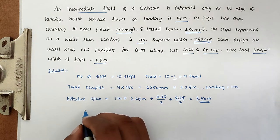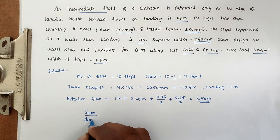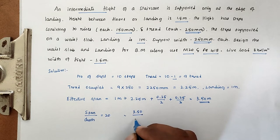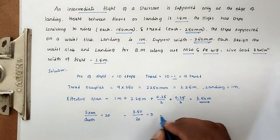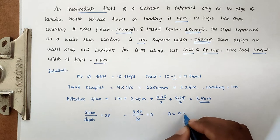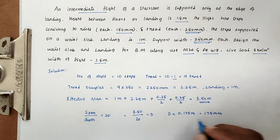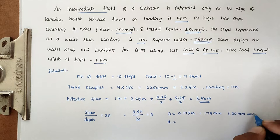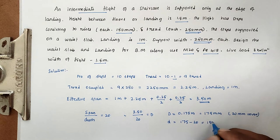From IS456, span/depth = 20. Substituting 3.50 / 20, we get depth = 0.175 meter, i.e., 175mm. The effective depth equals 175mm minus 20mm cover, giving an effective depth of 155mm.